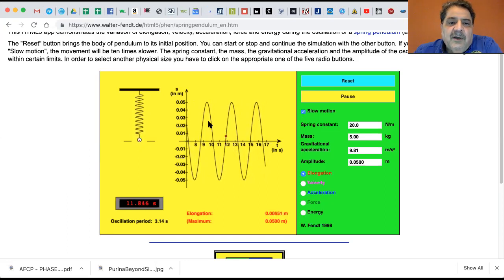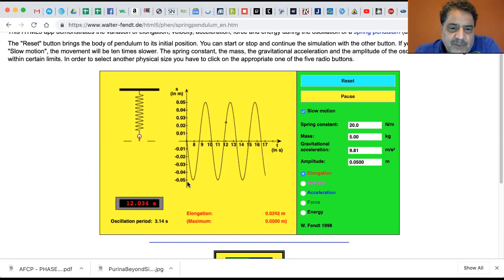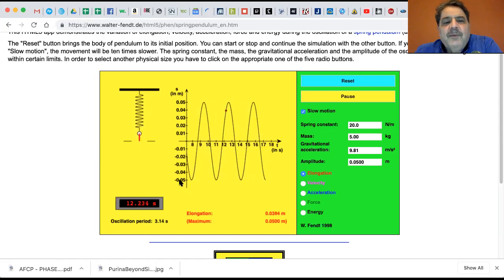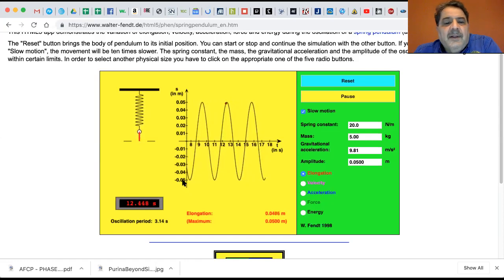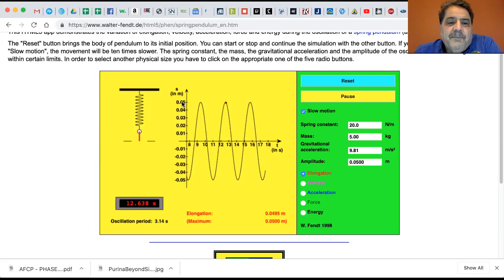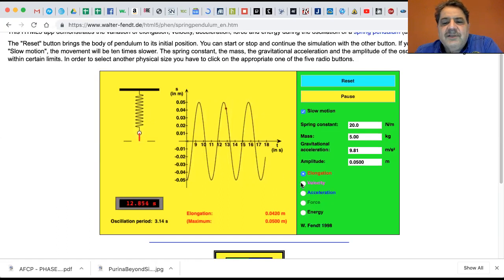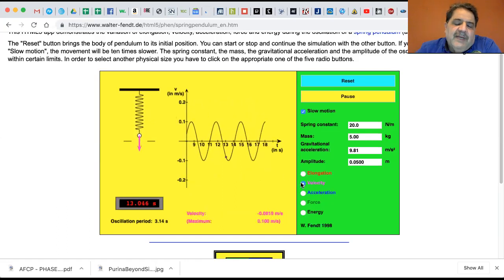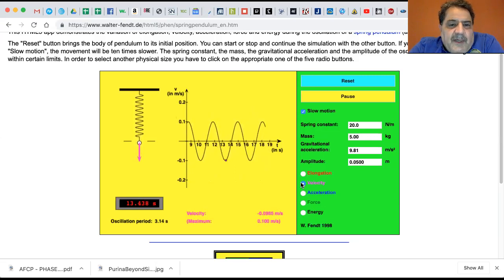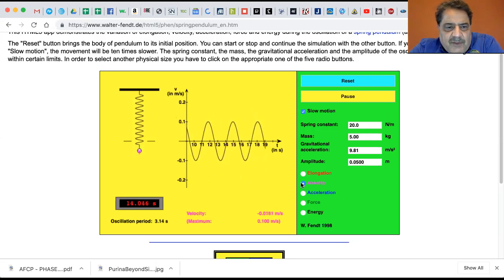So the elongation, you can see it goes between negative 0.05 meters to positive 0.05 meters. Now let's look at the velocity. Again, the velocity, this is in slow motion. So it goes between 1 meter per second, positive, and minus 1 meter per second. It's going back and forth.